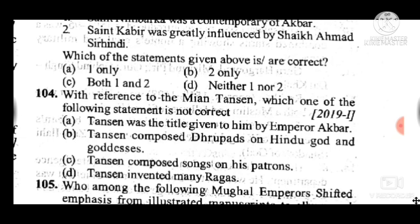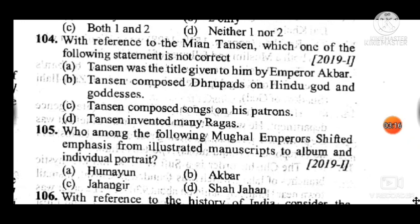Question 105: Who among the following Mughal Emperors shifted emphasis from illustrated manuscripts to albums and individual portraits? Answer is C, Jahangir.